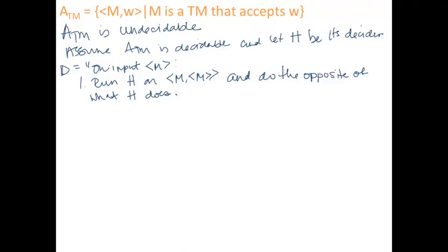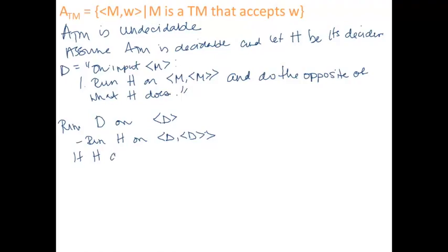So that's what D does. Now we're going to run D on D — run it on itself. It's going to run H on D, D. If H accepts DD, this says H is the decider for ATM — it said that machine D accepted the string encoding of machine D — and D does the opposite of that. Then D rejects D.